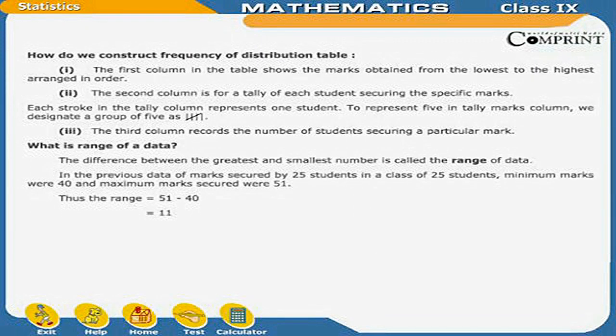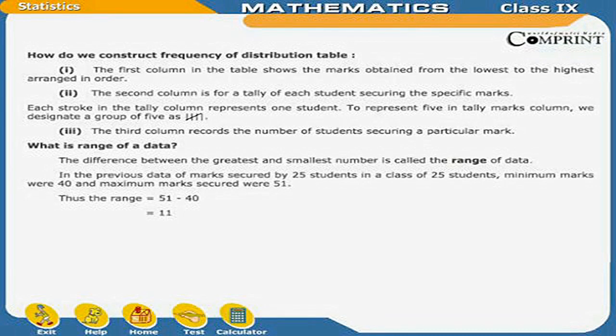How do we construct a frequency distribution table? First, the first column shows the marks obtained from the lowest to the highest arranged in order. Second, the second column is for tally marks of each student securing specific marks. Each stroke in the tally column represents one student. To represent 5 in tally marks column, we designate a group of 5. Third, the third column records the number of students securing a particular mark. What is range of data?